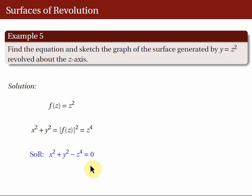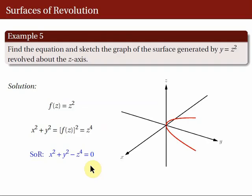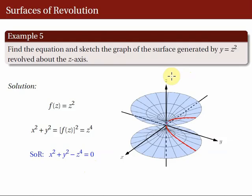To sketch the graph, we begin by sketching y = z² on the YZ coordinate plane, giving us a parabola. We then revolve the generating curve about the Z-axis to obtain the surface of revolution. We can also see the magenta curve, which is the trace of the SOR on the XZ coordinate plane. Revolving the magenta curve about the Z-axis yields the same SOR.